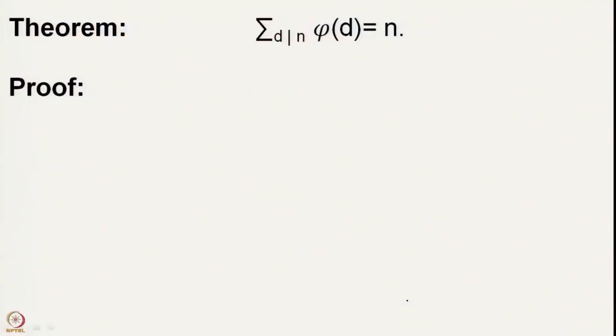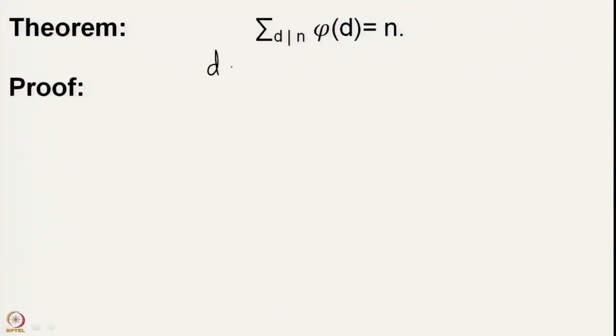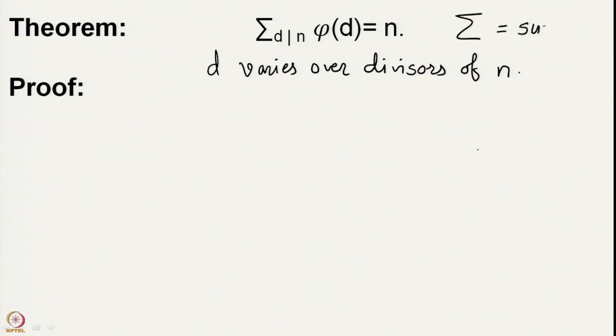There is one very nice relation with the Euler phi function and the number N that we have. This is one very basic and very standard result which we are going to state and prove. The result says that when you take the summation of φ(d) where d varies over the divisors of a particular number N, then the answer you get is equal to N. Here d varies over divisors of N, and this sum is indeed equal to N.